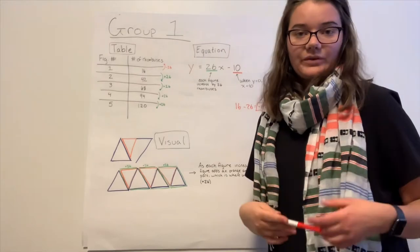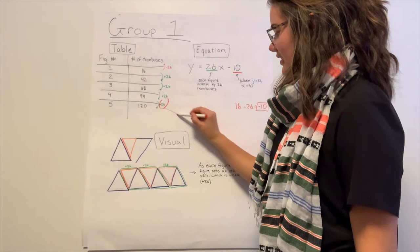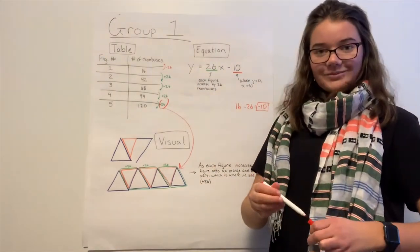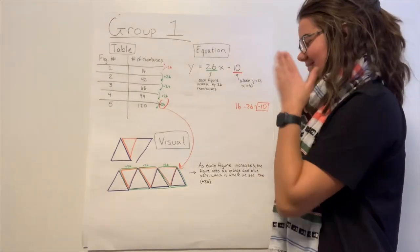Once again, I would ask some questions about how they got it, where it connects to the visual, you know, oh, here's the 26 and it connects because we're adding a blue and an orange each time, which is 26, big numbers. And then, the last question kind of like how I would wrap up this lesson.